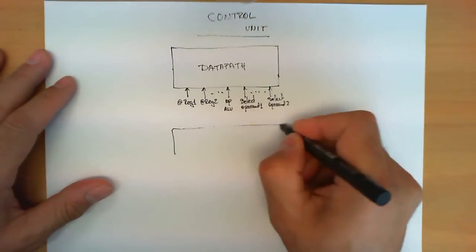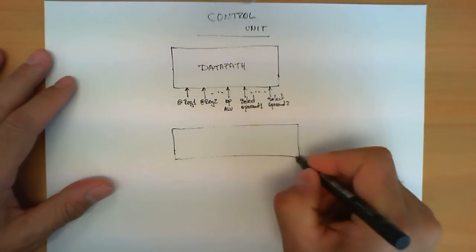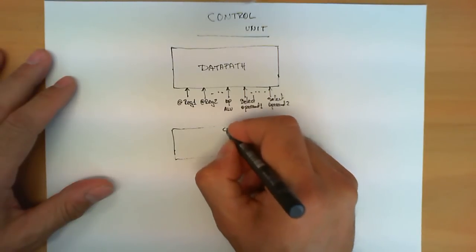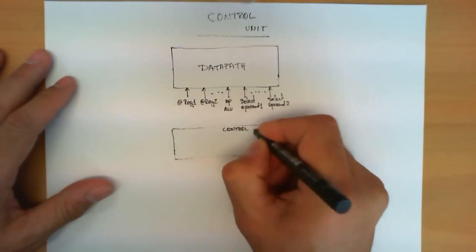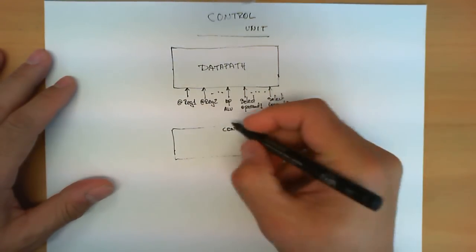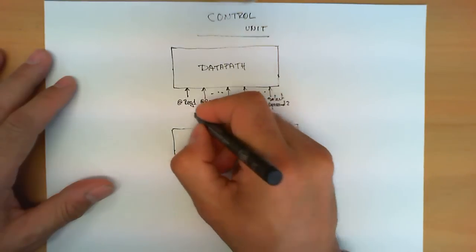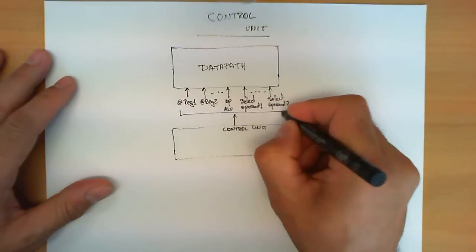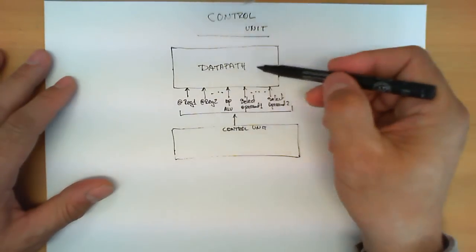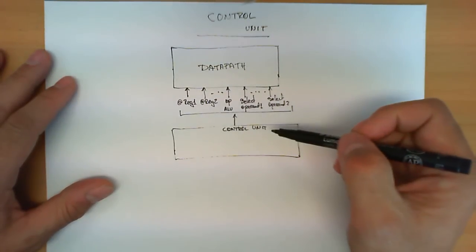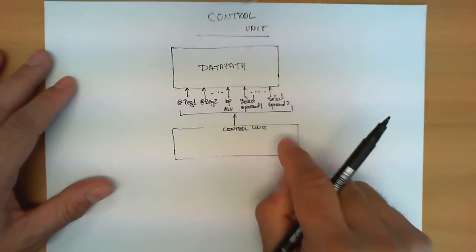This is precisely the responsibility of the control unit. It needs to create all these signals that modify the behavior of the data path to perform the right set of operations.